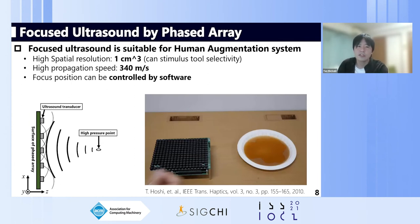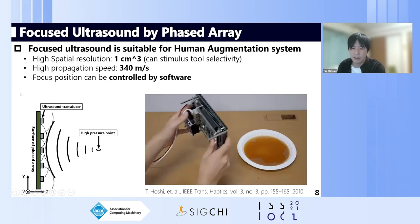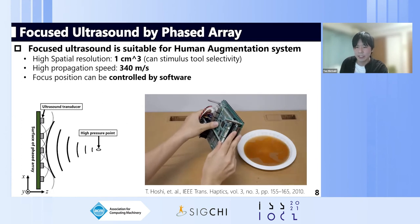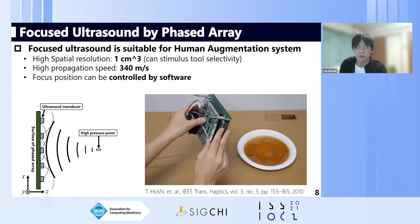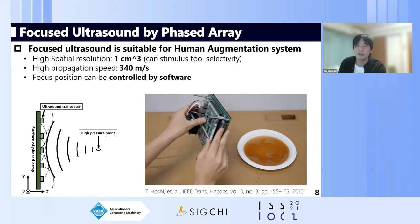In the system we adopt focused ultrasound as a non-contact force presenter. This device is named the phased array, and the phased array creates a single-point focus. The ultrasound focus pushes on the surface of the water in a non-contact manner. The spatial resolution of the force distribution is very high — about one cubic centimeter — and the propagation speed is very high, essentially sound velocity. The focus position can be controlled by software, making it very suitable for human augmentation systems.